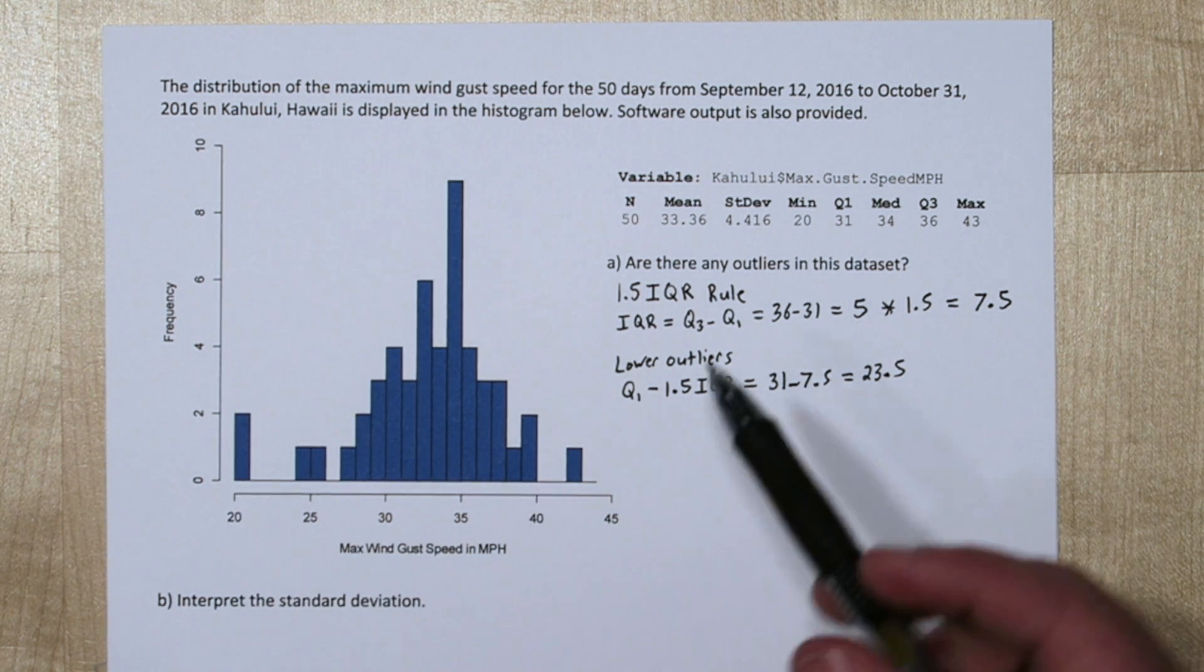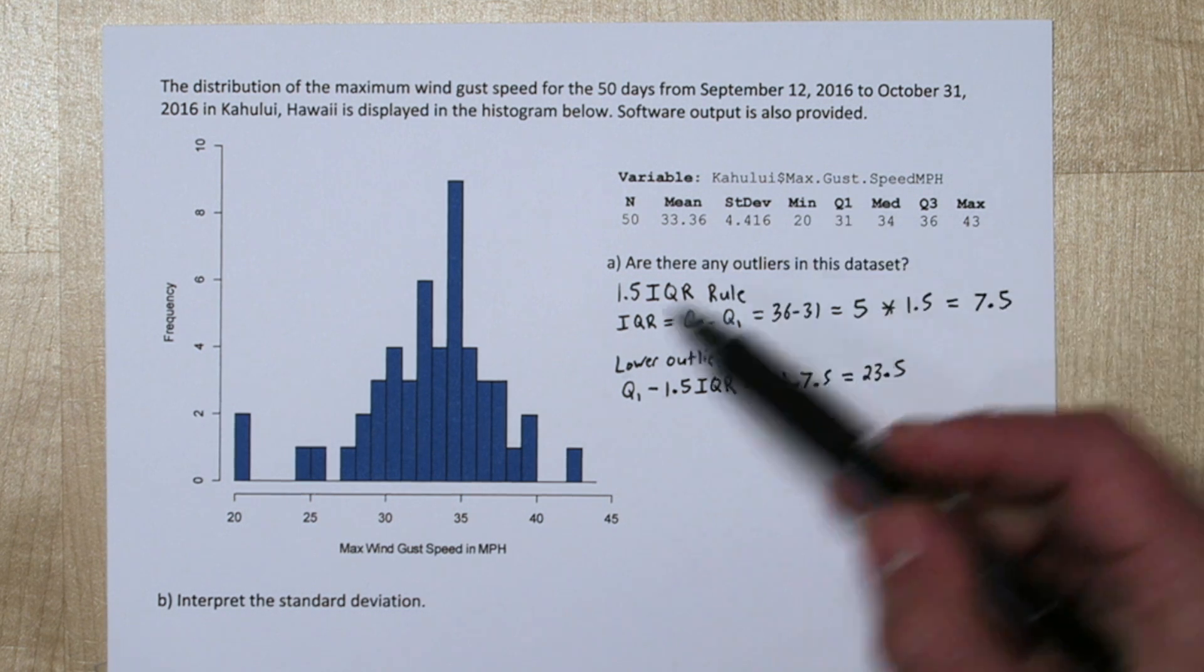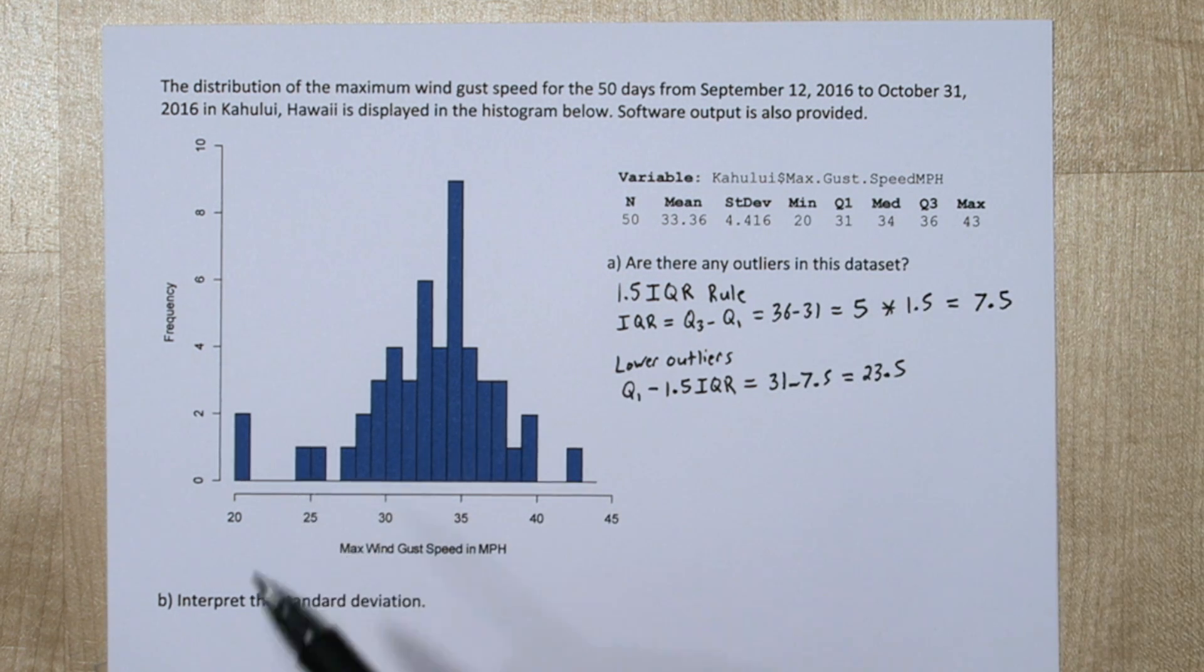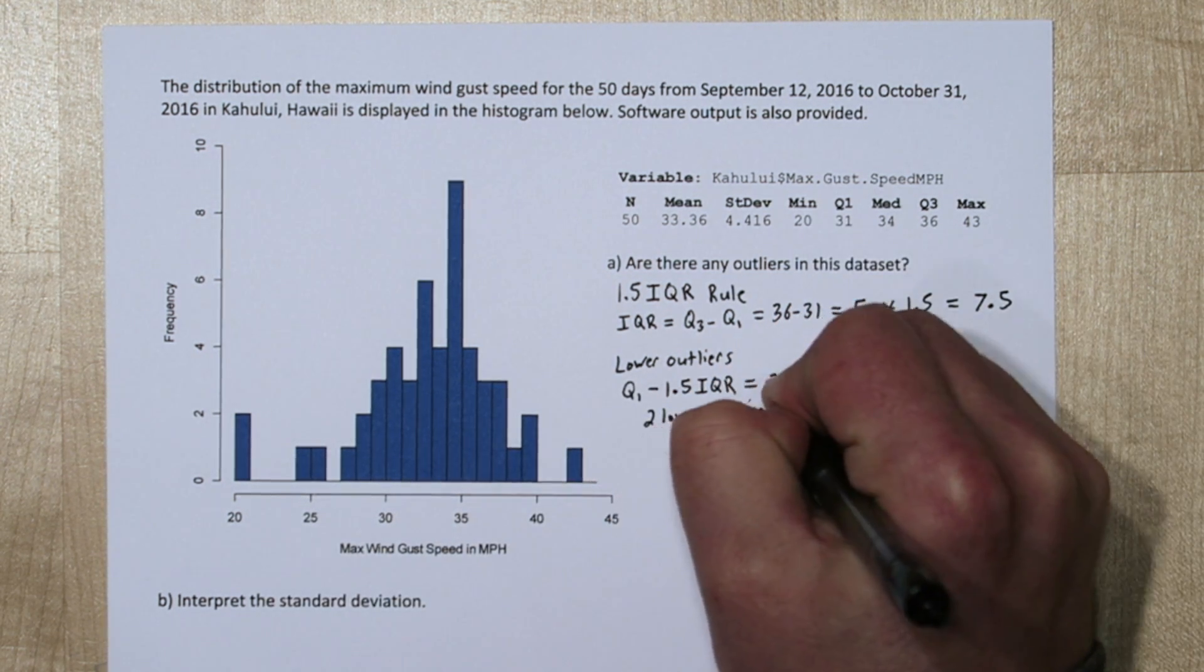We don't really know what their values are, although we can see the minimum is 20, so at least one of these is 20. The other one might be 20 as well, or maybe it's 21.